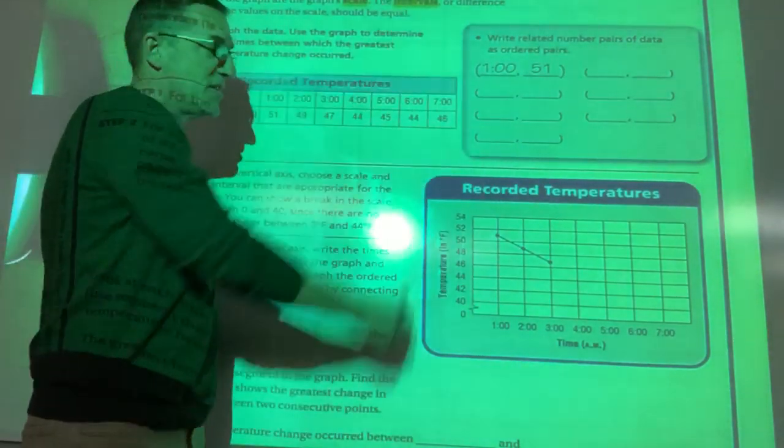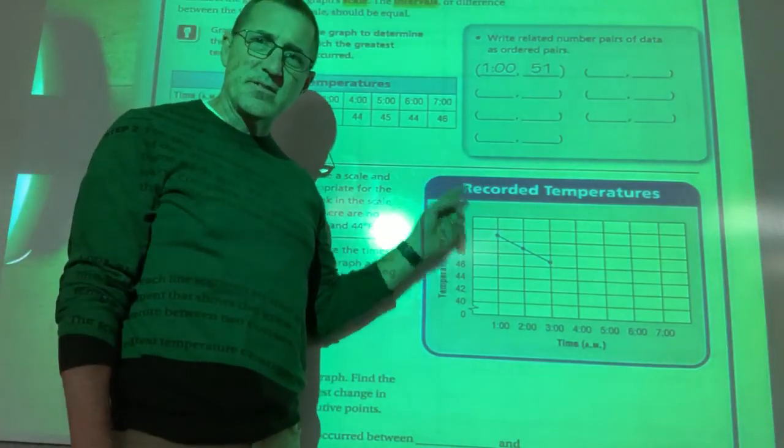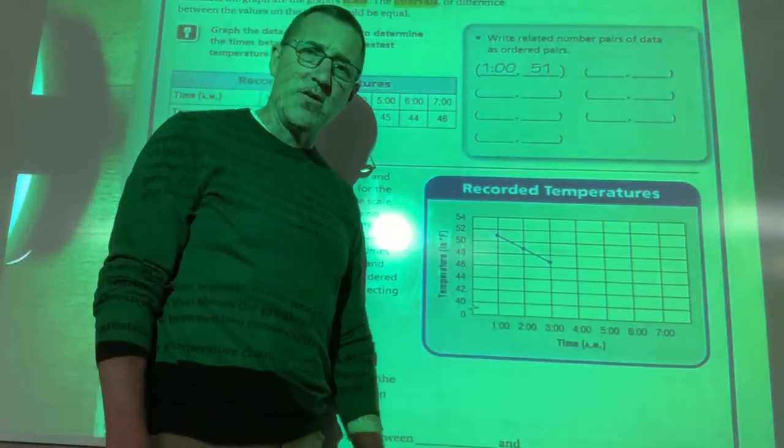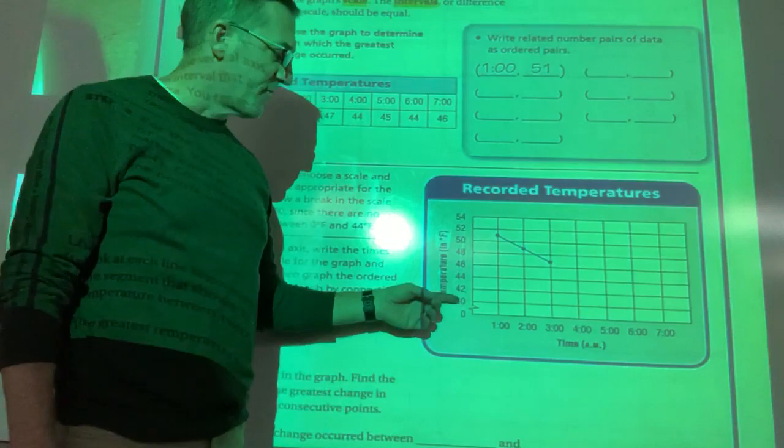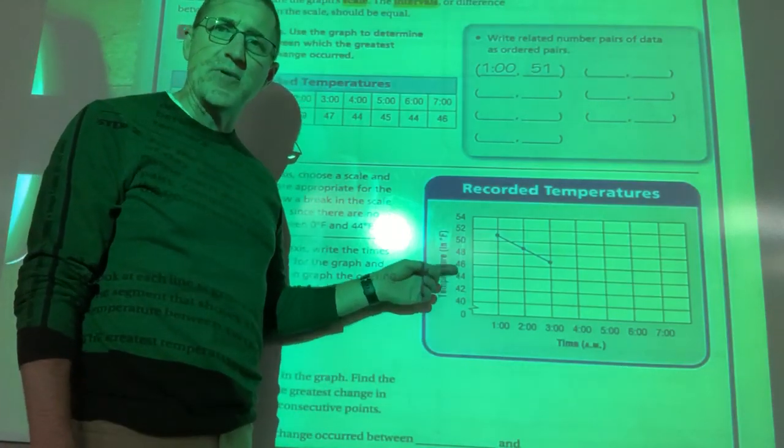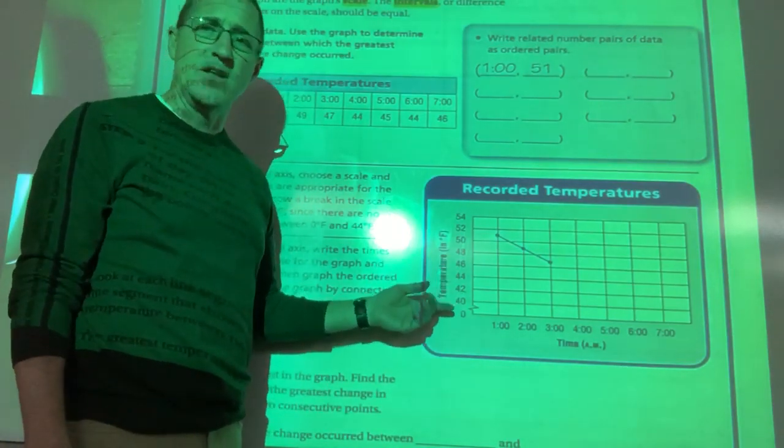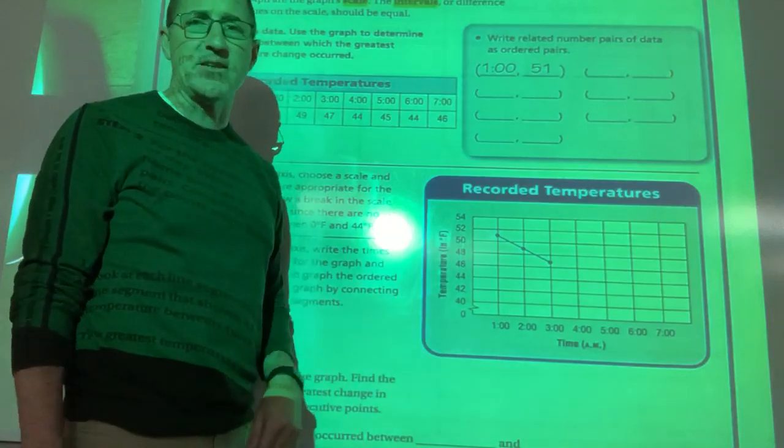And then we have intervals, which is the difference between your numbers on your side, on your scale. So if you have a difference, an interval of two, you want to keep it as two. You don't go two, then five and 10, whatever feels good. You keep it the same so that the graph makes sense.